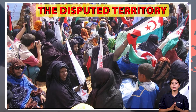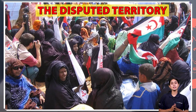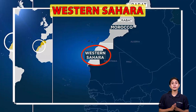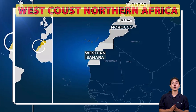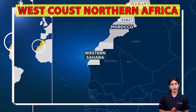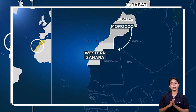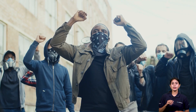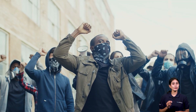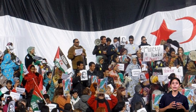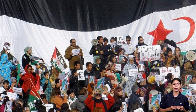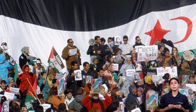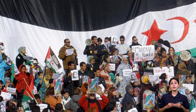The disputed territory, Western Sahara, is located on the west coast of Northern Africa, between Morocco and Mauritania. The territory is currently in conflict between local inhabitants seeking independence and Morocco, which claims the territory as its own.